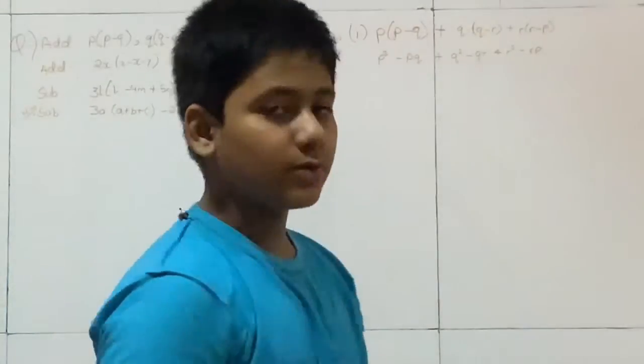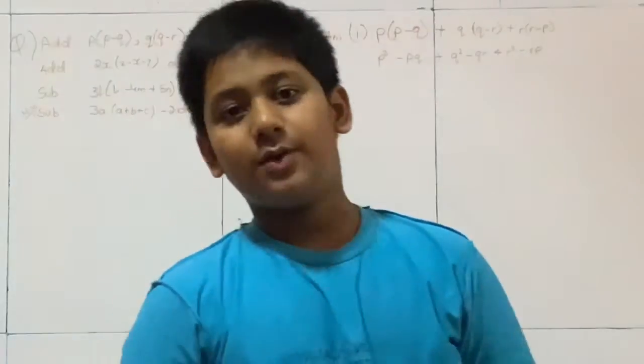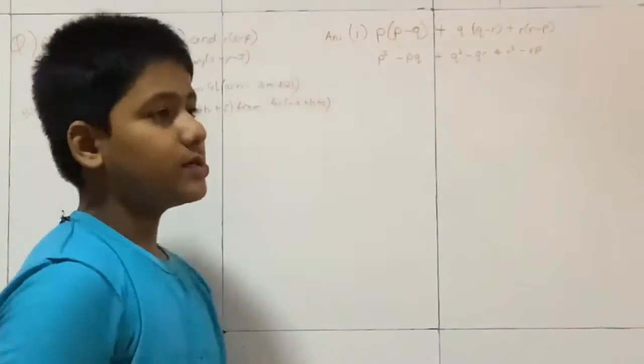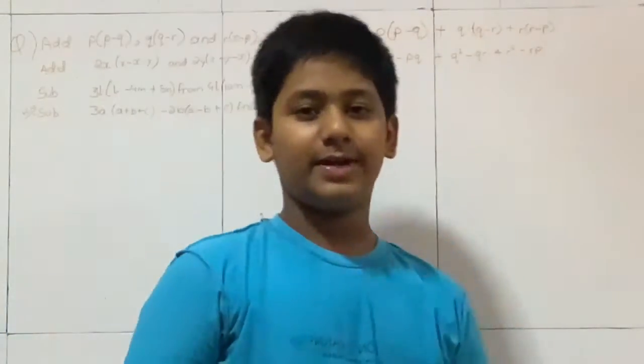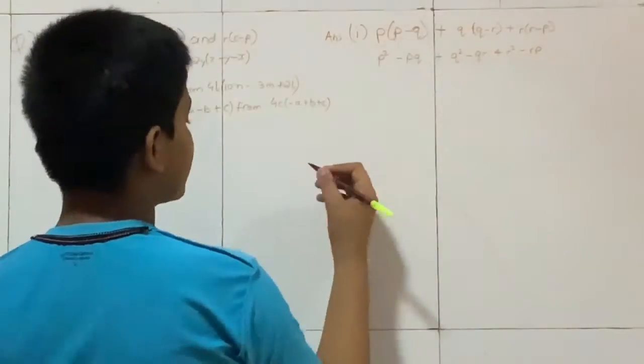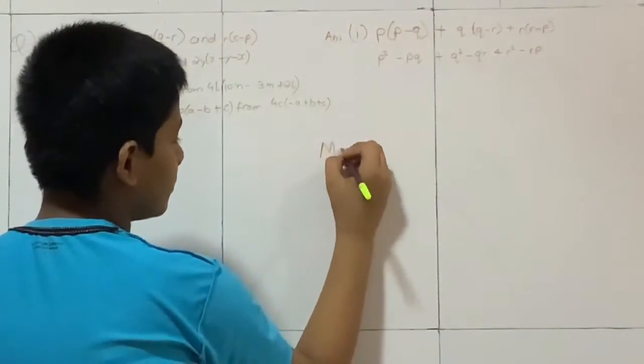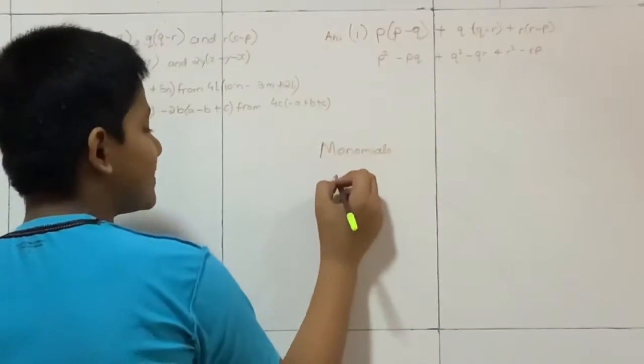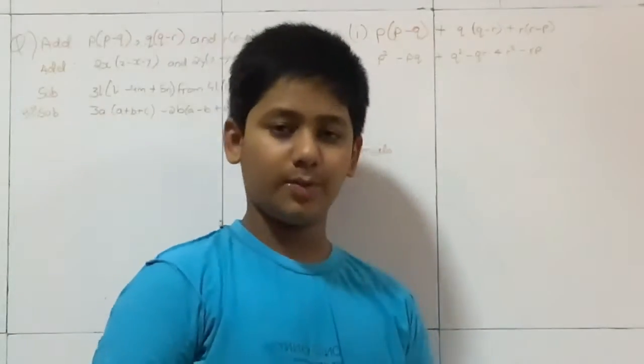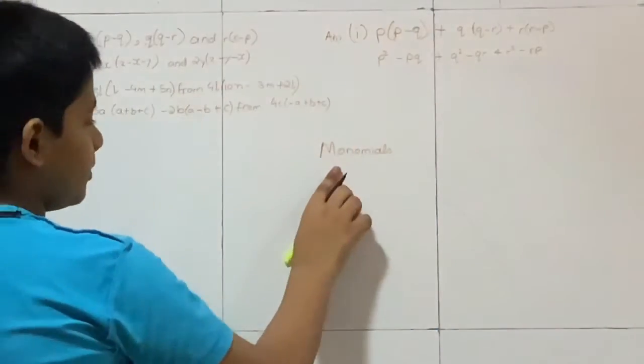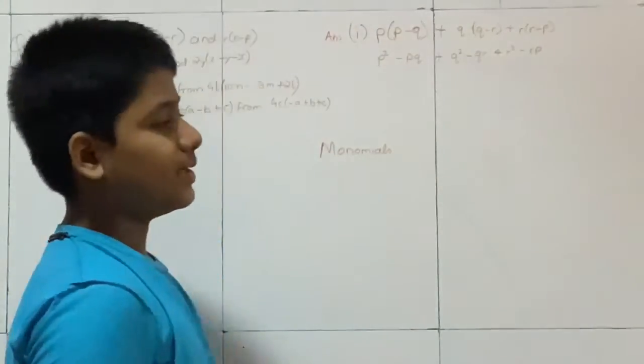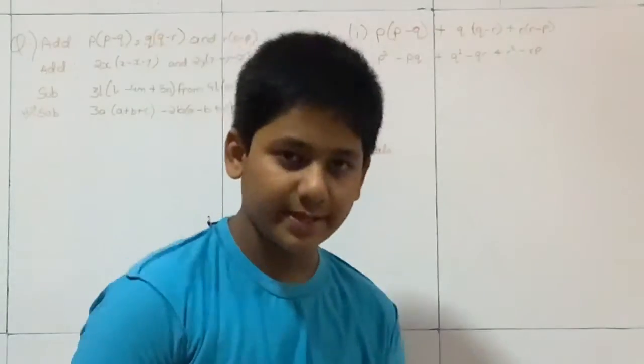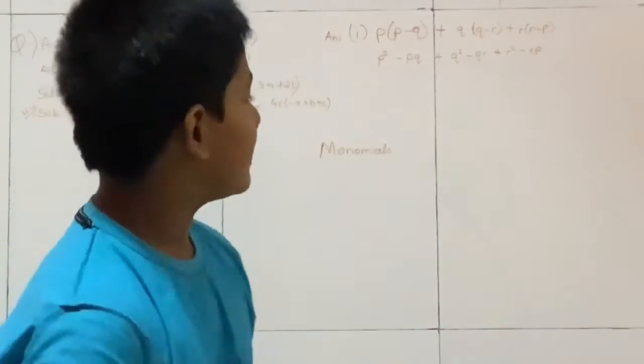Now I think you must have heard in this chapter the word monomials, binomials, trinomials. So if you not heard, now let me explain to you. Monomials means which are single, which have only one variable or one digit number. And binomials, which have two digits or two variables.